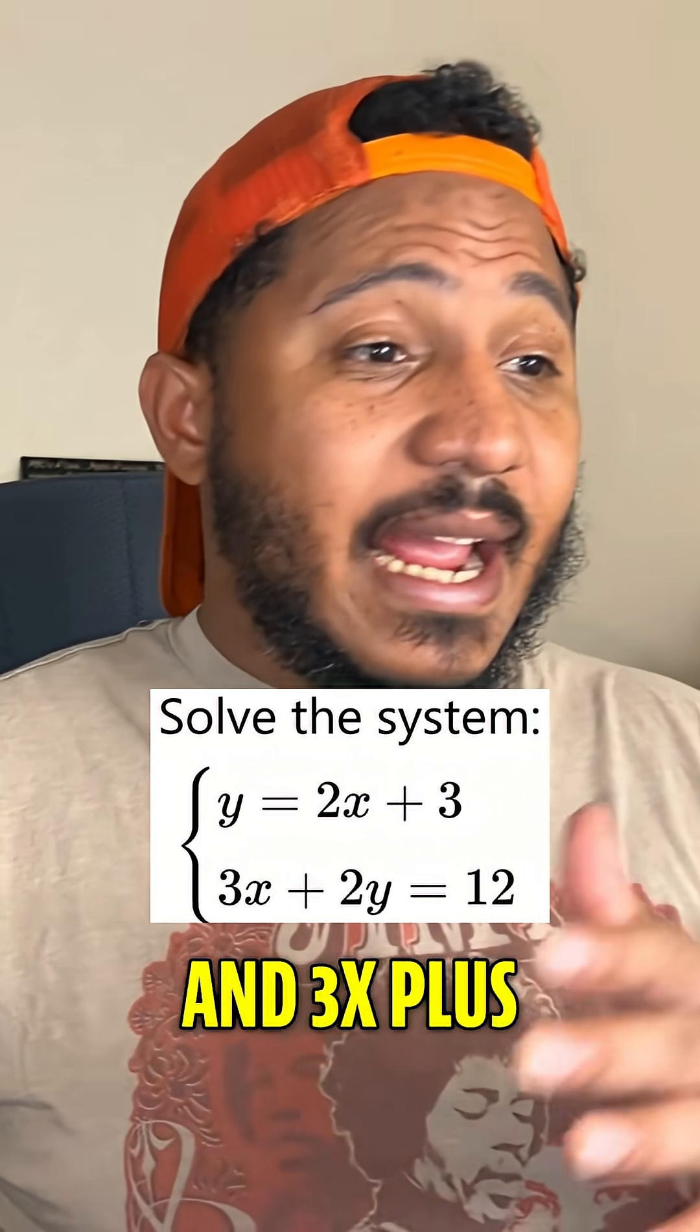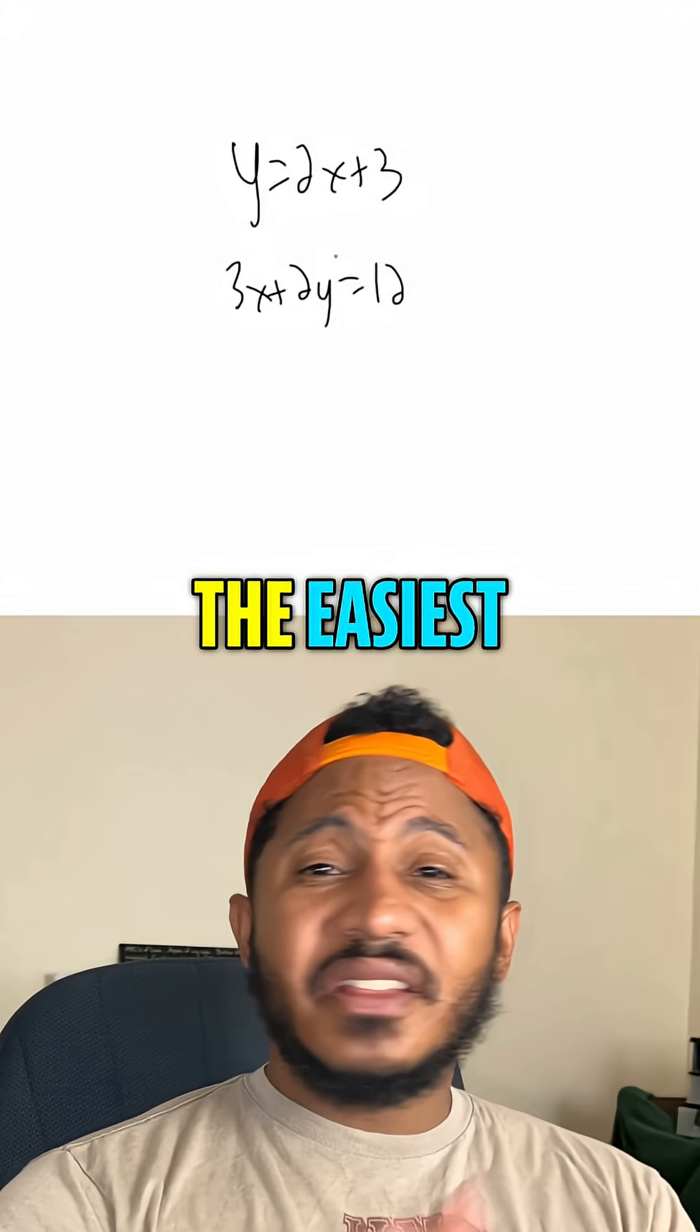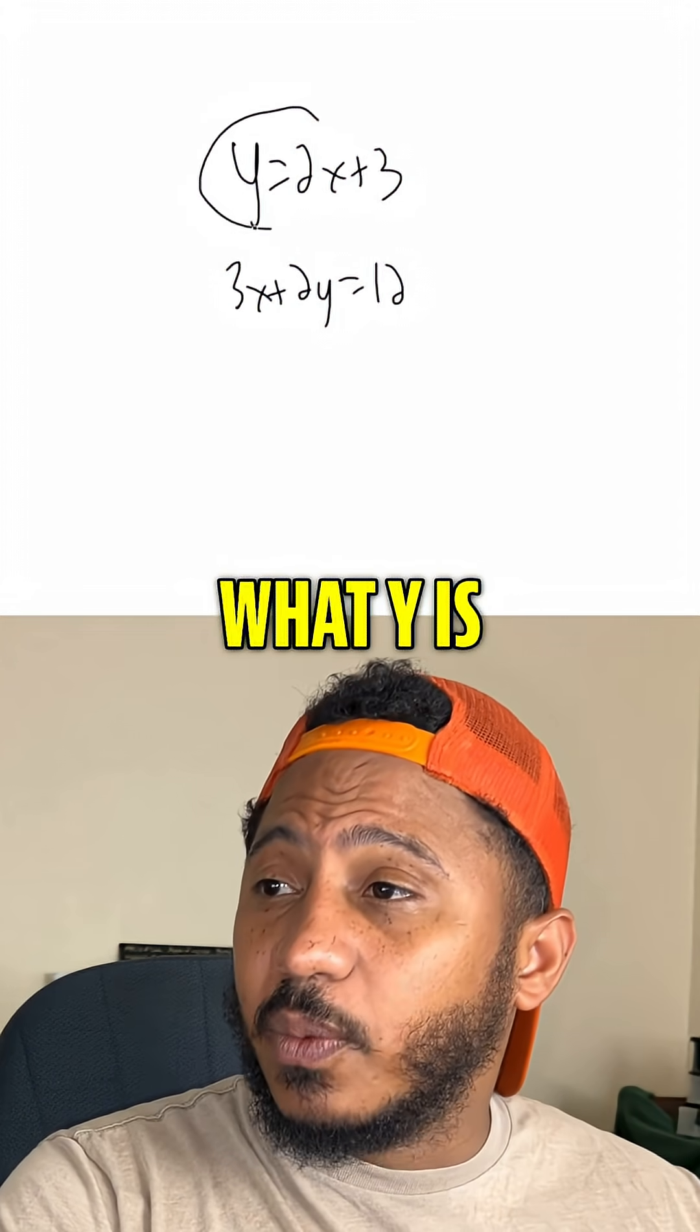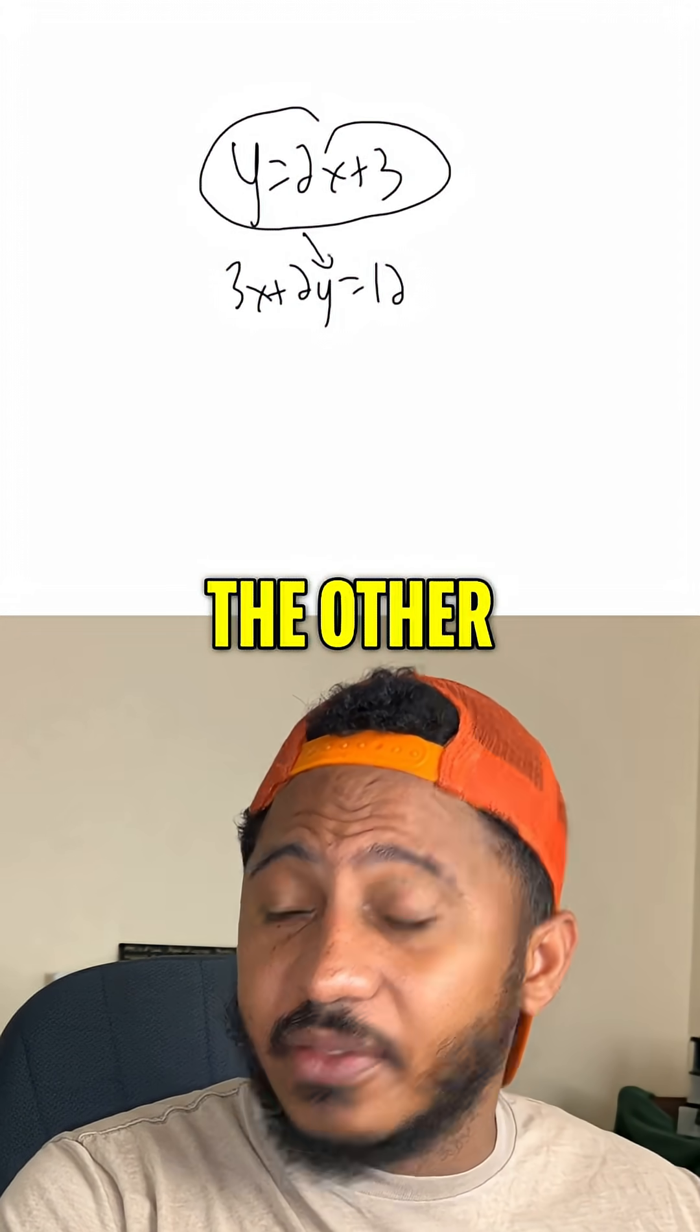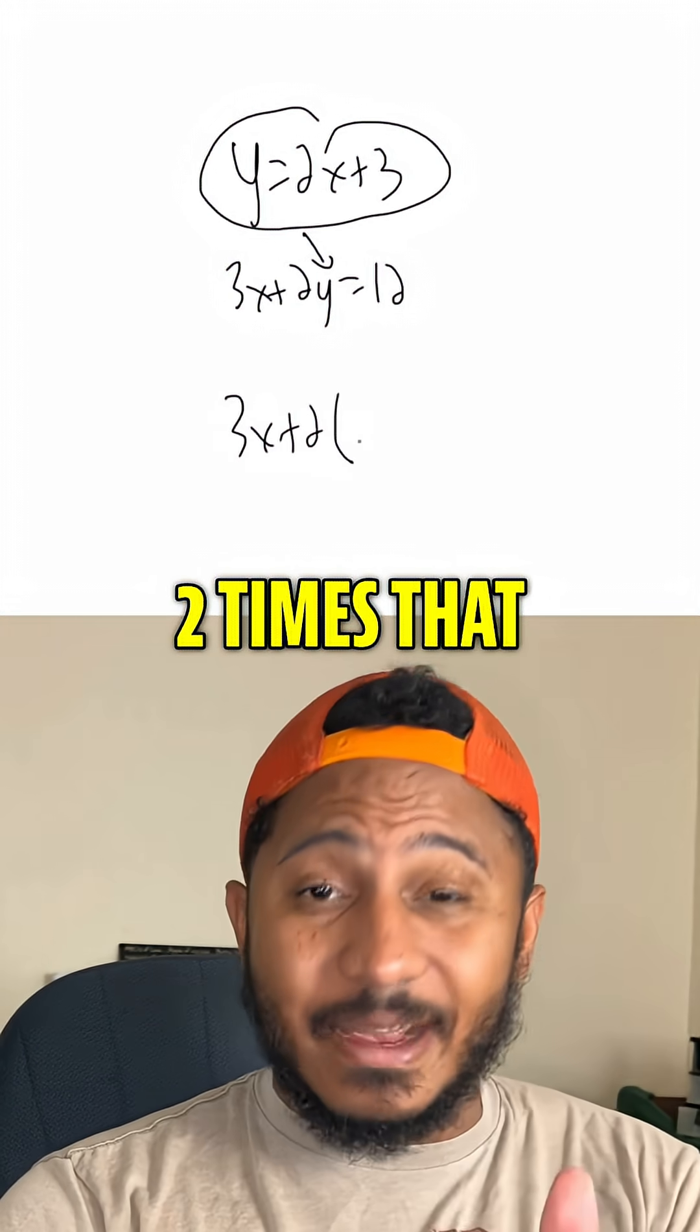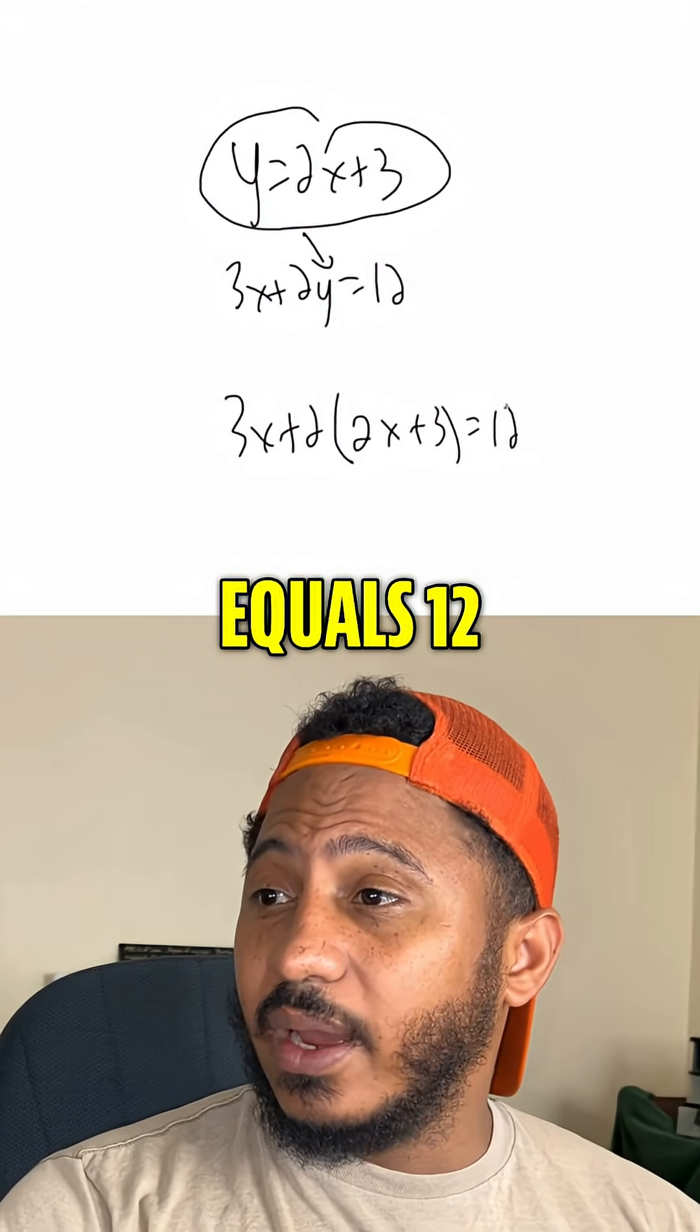Solve this system. We got y equals 2x plus 3 and 3x plus 2y equals 12. So the easiest way to solve this one is by substitution. Because we have y already by itself, we can plug in what y is into the other equation or substitute it in. So we get 3x plus 2 times that y, times 2x plus 3, equals 12.